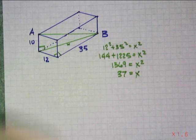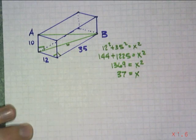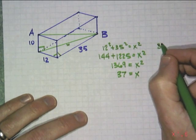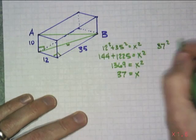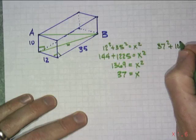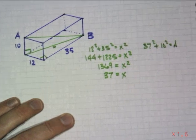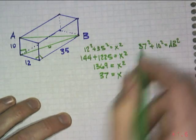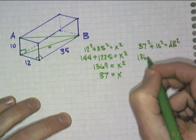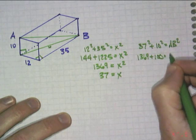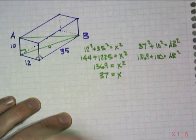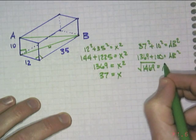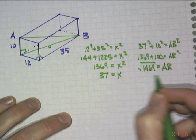So we have the diagonal across the floor, which is 37. Now it only becomes a problem of: we'll just take 37 squared plus the height, which is 10, and that is going to be AB squared. 37 squared — we already did it — so 1369 plus 100 is equal to AB squared, and that's 1469. Take the square root of that, and there's AB. That is my exact answer.